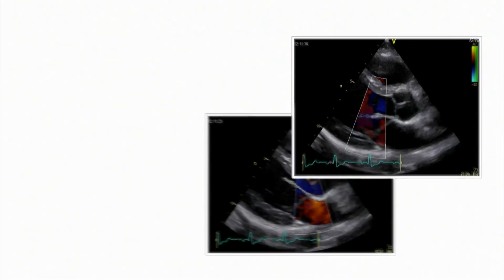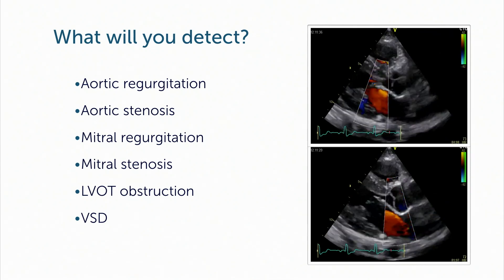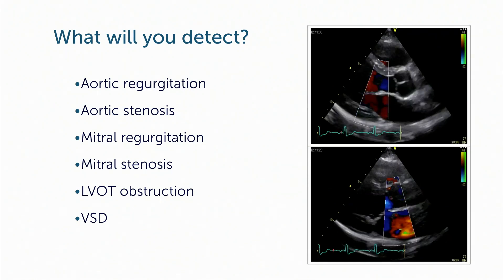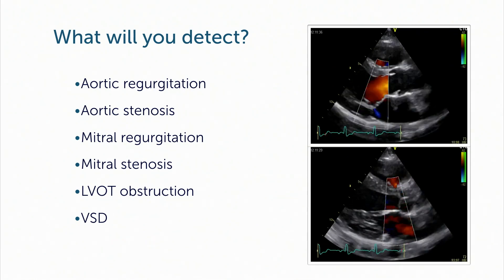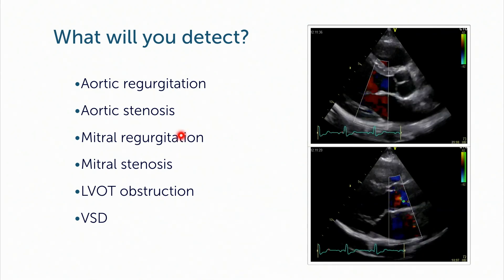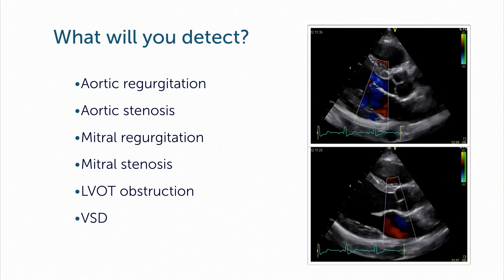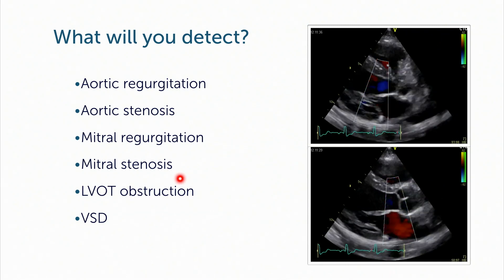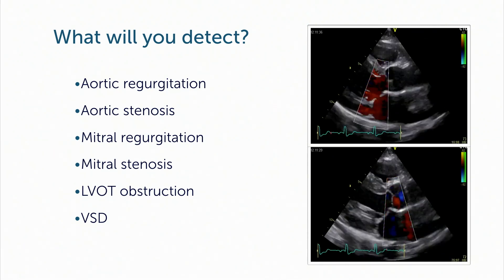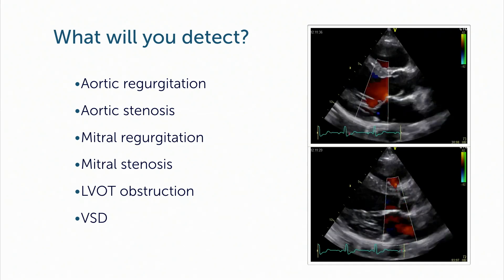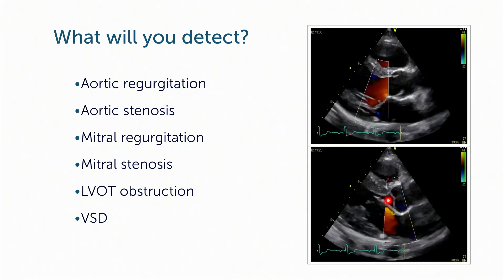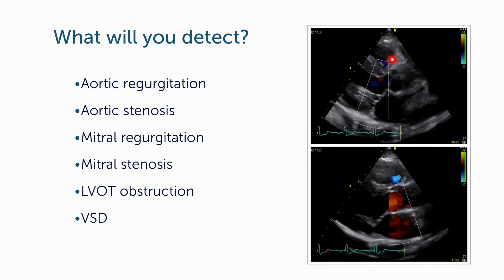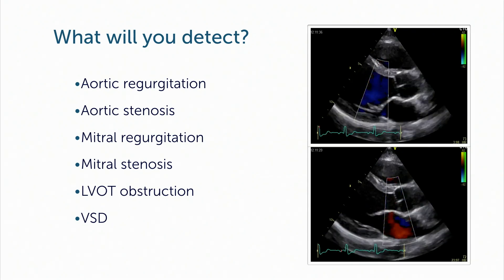Here's where else we can use color Doppler in the parasternal long axis view: aortic regurgitation, aortic stenosis where you'll see turbulent flow or flow acceleration at the aortic valve, mitral regurgitation as seen in this case, and mitral stenosis where you'll see turbulent inflow into the left ventricle. It's also a perfect view for LVOT obstruction, letting you determine whether flow acceleration occurs at the valve or below it. Finally, you can also detect a ventricular septal defect, though this is probably not the ideal view for visualizing a VSD.